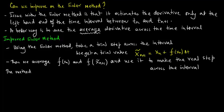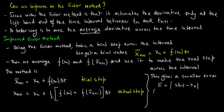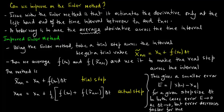The method gives x n plus 1 using the averaged derivative, which gives a smaller error e, which is x of tn minus xn for a given step size delta t. In both cases the error e tends to 0 as delta t tends to 0, but the error decreases faster for the improved Euler scheme.